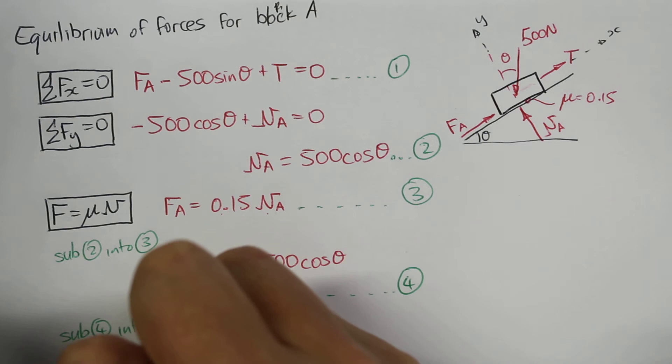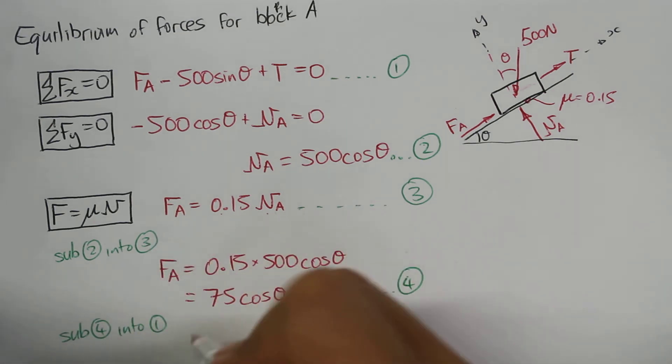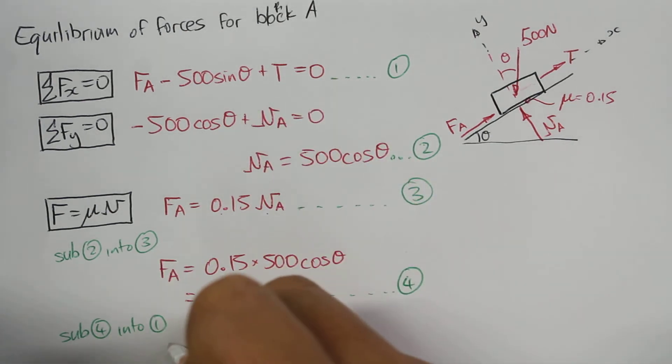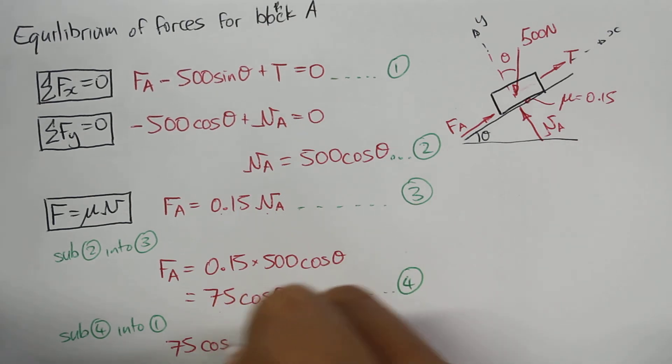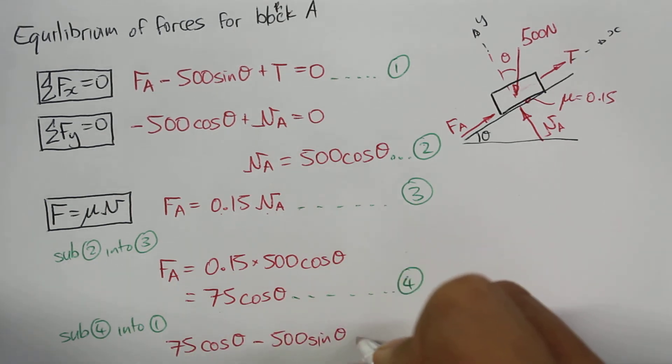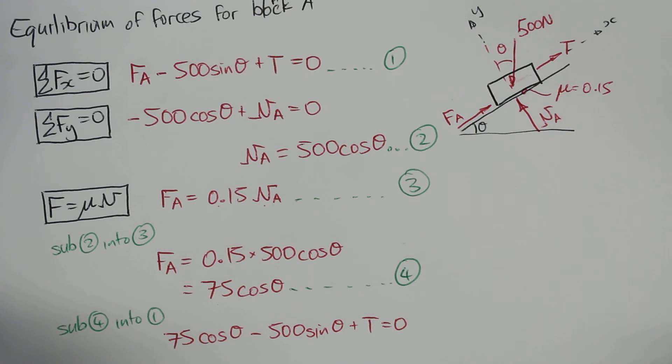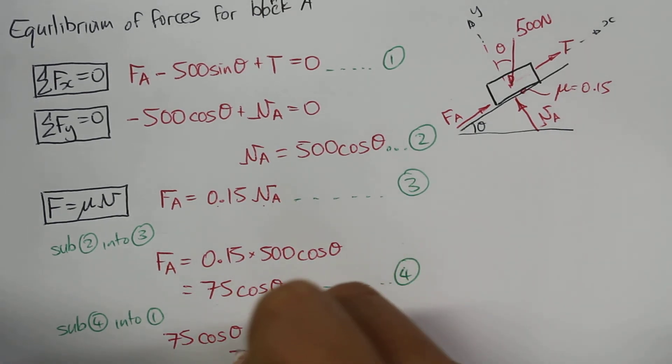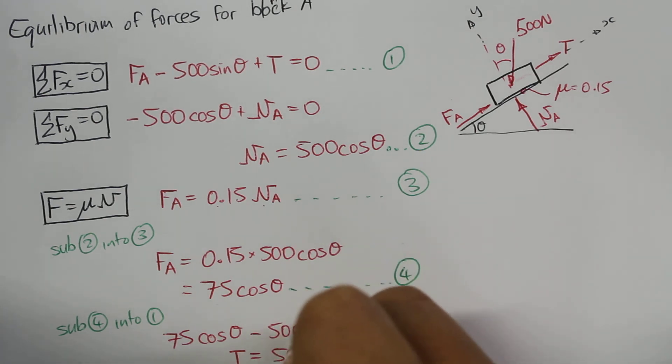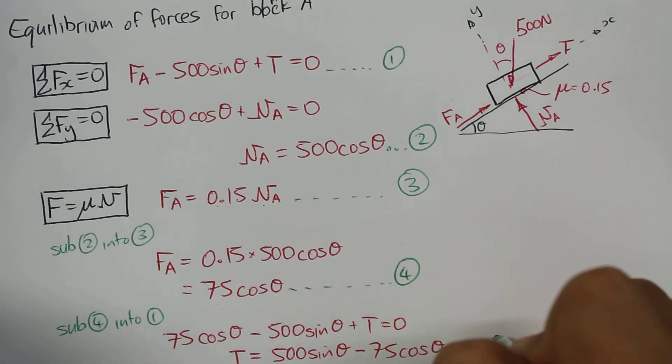And then substitute equation number 4 into the first equation, so equation number 1. Okay, so equation number 4 goes into equation number 1, we get 75 times cosine theta minus 500 times sine theta plus T equal to 0. So we can change that slightly, make it so that T is the subject. We get T equal to 500 sine theta minus 75 cosine theta. We can call this equation number 5.